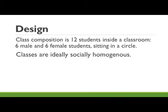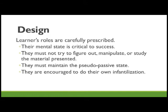Classes in Suggestopedia are composed of twelve students only — six boys and six girls — always equal and always in a circle formation. Classes are ideally socially homogeneous, with students' aptitude checked so they share the same ability level, all in one room.